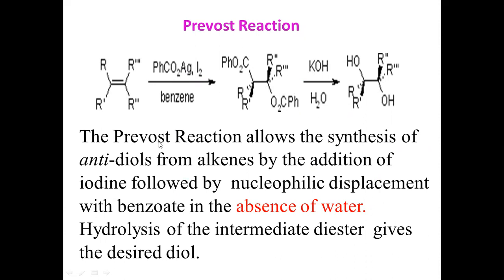The Prévost reaction allows the synthesis of anti-diols from alkenes by the addition of iodine followed by nucleophilic displacement with benzoate. Here we are taking silver salts of benzoates or acetate, so the nucleophilic displacement with benzoate is performed in the absence of water — under anhydrous conditions. Followed by hydrolysis of the diester under basic conditions, it results in the formation of anti-diols. This is the Prévost reaction.